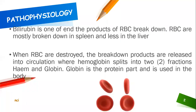Neonatal jaundice is premised on the hemolysis of erythrocytes. Hemolysis is simply the destruction of the red blood cells. Bilirubin is one of the end products of hemolysis. Usually, this destruction of the erythrocytes will occur in the spleen, and it is considered to occur less in the liver.